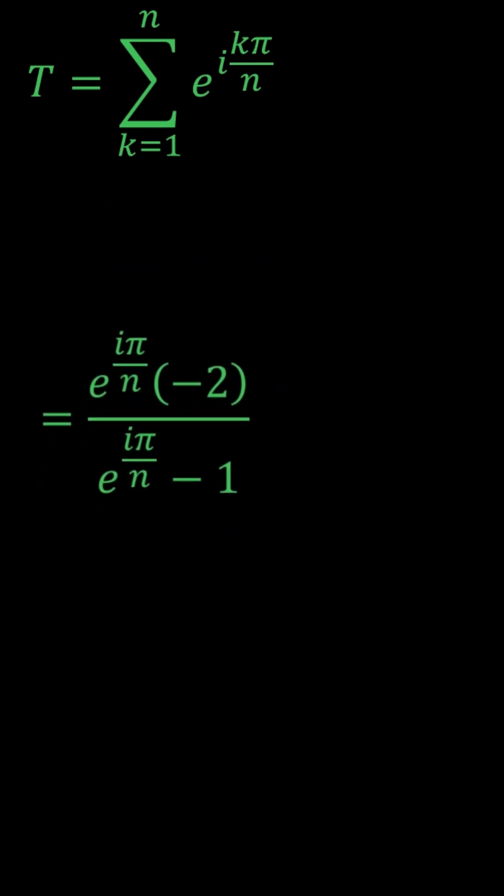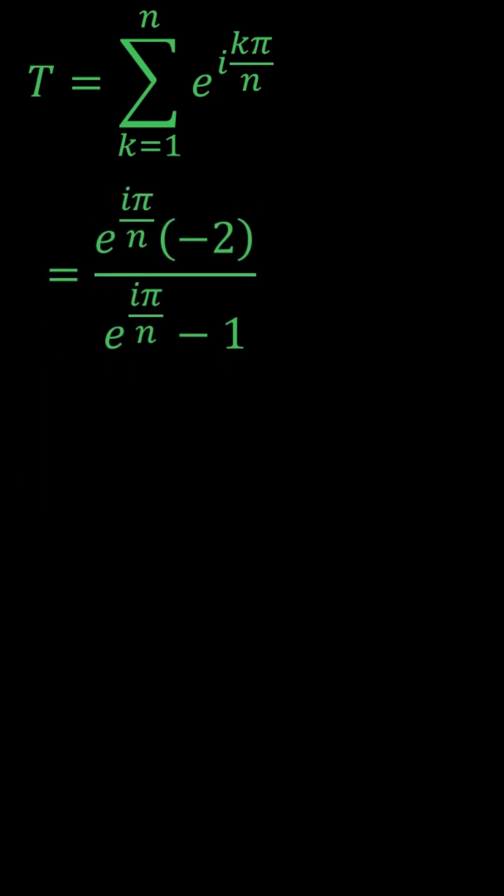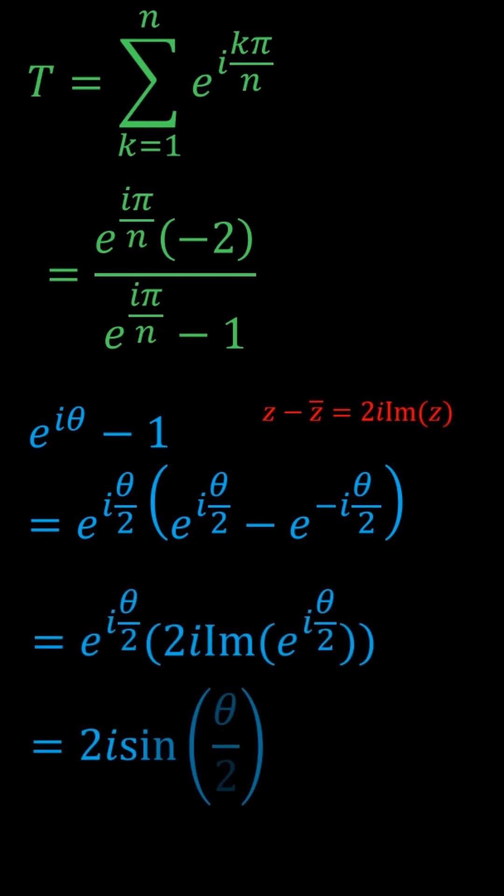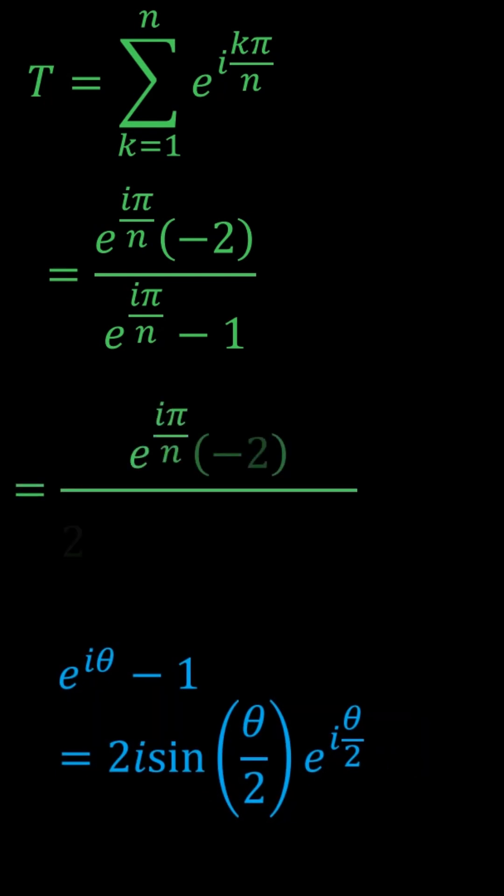Now we're going to use a pretty useful fact. Whenever you have e^(iθ) - 1, you can factor out e^(iθ/2), and this remaining term is in the form z minus z conjugate. This is quite useful because it cleans up the expression. So let's apply this to what we have and simplify.